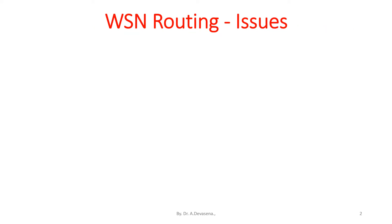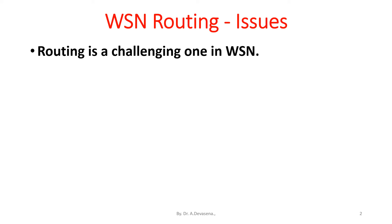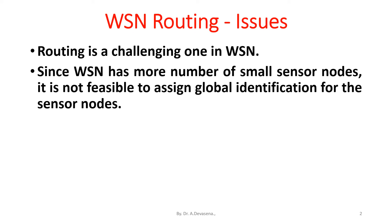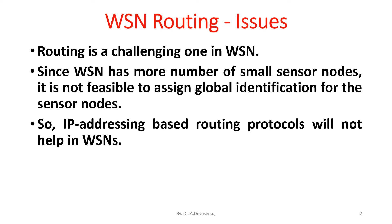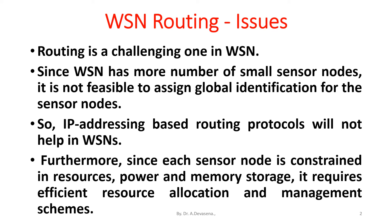Routing is a challenging one in wireless sensor networks. Since wireless sensor networks have a large number of small sensor nodes, it is not feasible to assign global identification for the sensor nodes. So IP addressing based routing protocols will not help in wireless sensor networks. Furthermore, since each sensor node is constrained in resources, power and memory storage, it requires efficient resource allocation and management schemes.